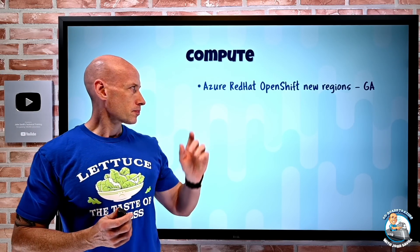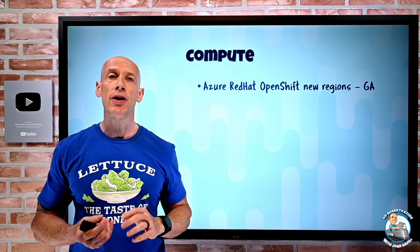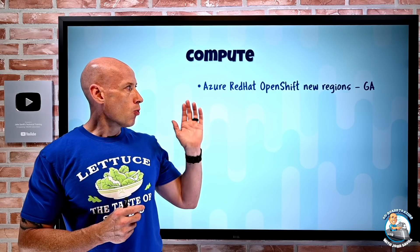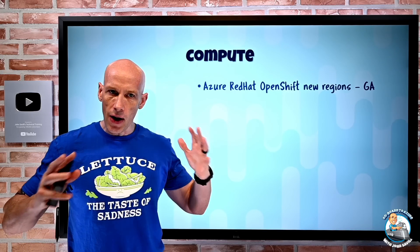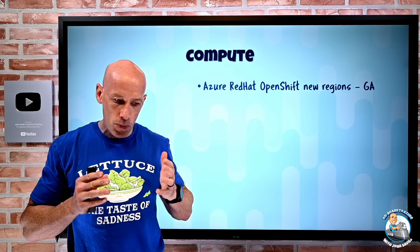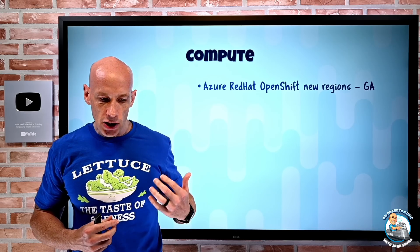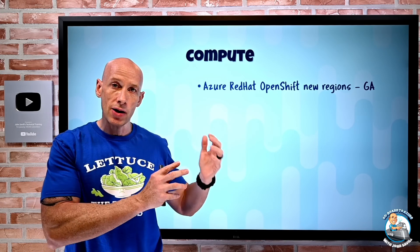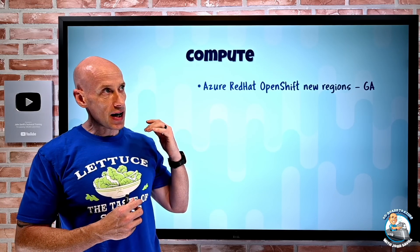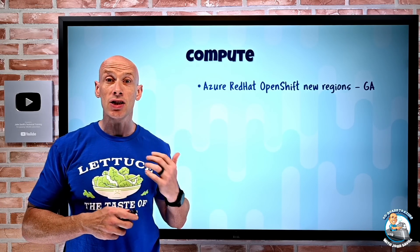Onto the new features from the compute side. Azure Red Hat OpenShift is available in new regions. The whole point of Azure Red Hat OpenShift is it's a highly available, fully managed OpenShift cluster on demand in Azure, monitored and operated jointly between Microsoft and Red Hat. It's now available in West Central US, Australia Central, and Sweden Central.